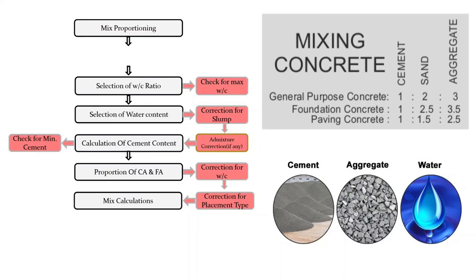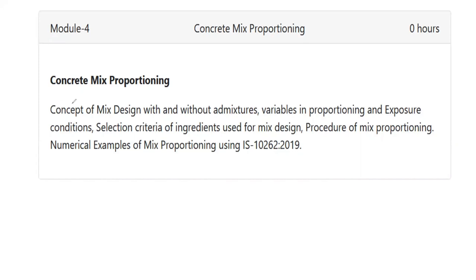Hello learners. In this entire series of lectures, we'll be taking up Module 4, which is about concrete mix proportioning. We'll begin with the concept of mix design with and without admixtures. If you use admixtures, the water content comes down, and as a result we get more strength. We'll also try to understand variables in proportioning and exposure conditions. According to IS 456-2000, exposure conditions include mild, moderate, severe, very severe, and extreme.